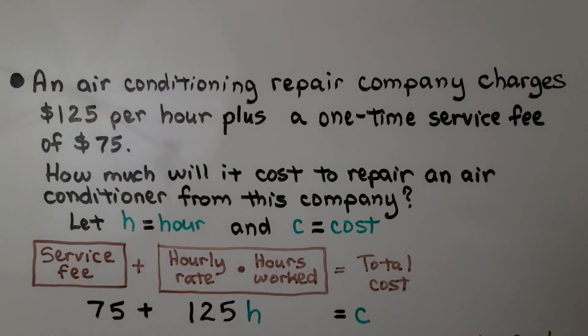So we have 75 plus 125H for multiplying the price per hour times the number of hours and that equals the cost.